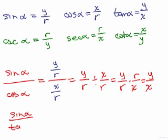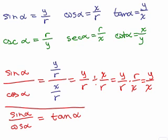That's another identity. The sine of alpha over the cosine of alpha, when you simplify it, ends up being the tangent of alpha.